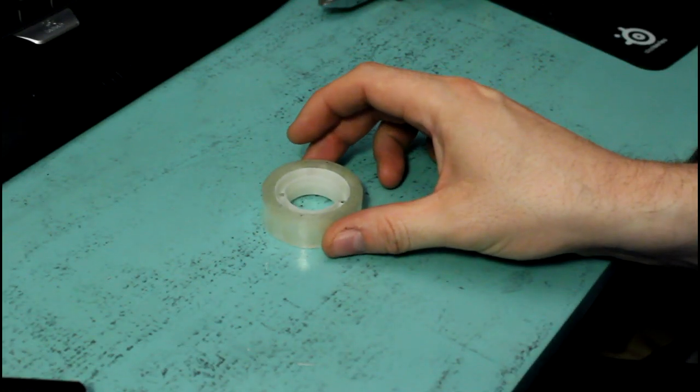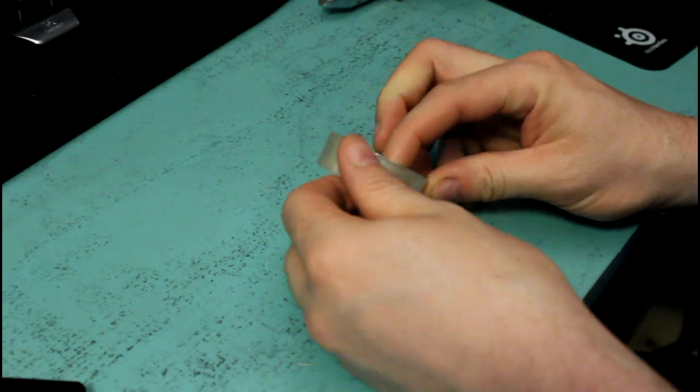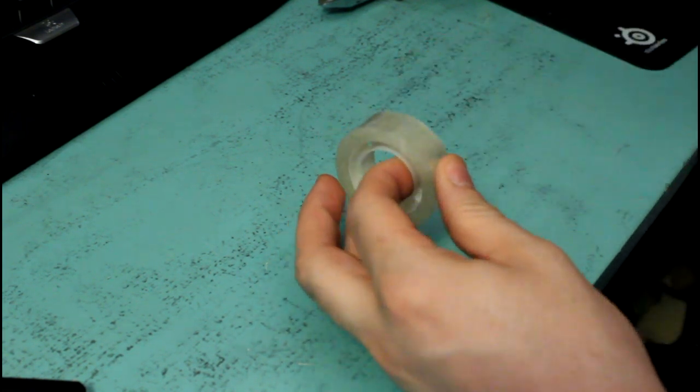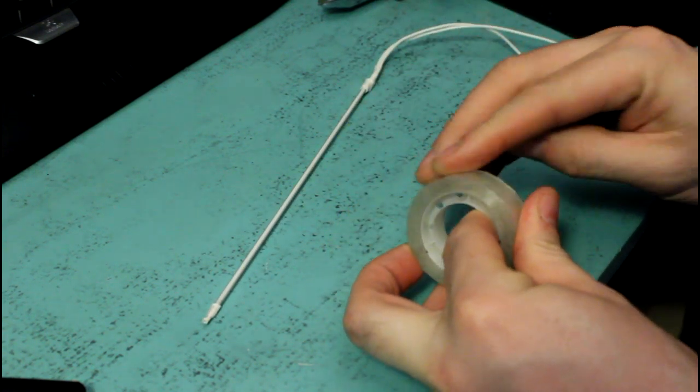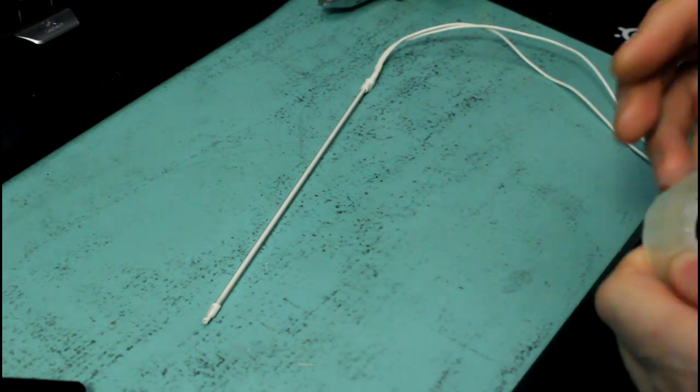And one last thing you want to do is to isolate the CCFL, because it has a live wire running on the outside and you don't want to get any shocks from that. Trust me, I've tried it. Use regular tape for that. Let me show you how.